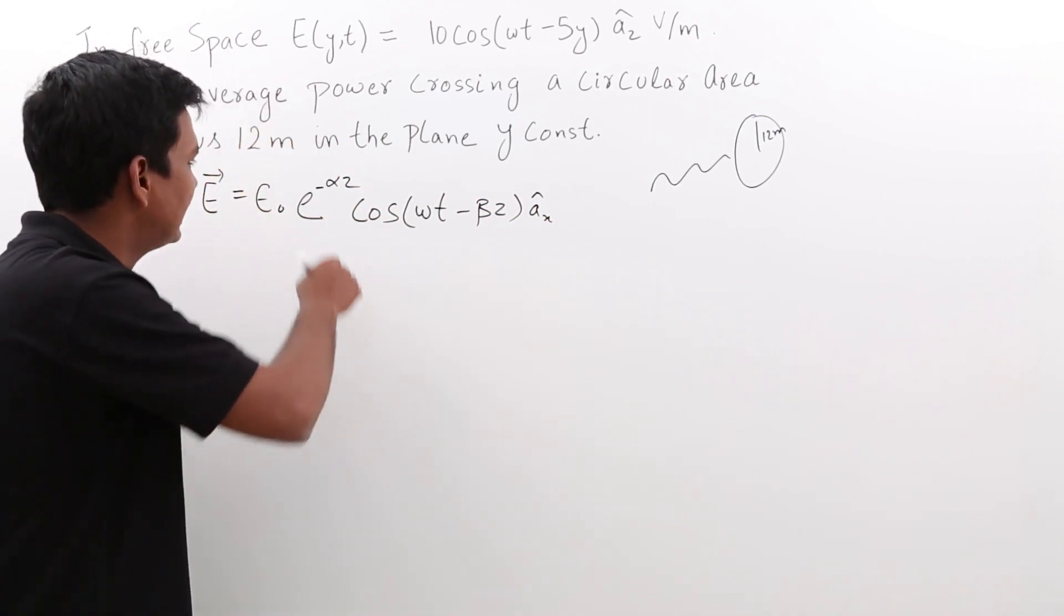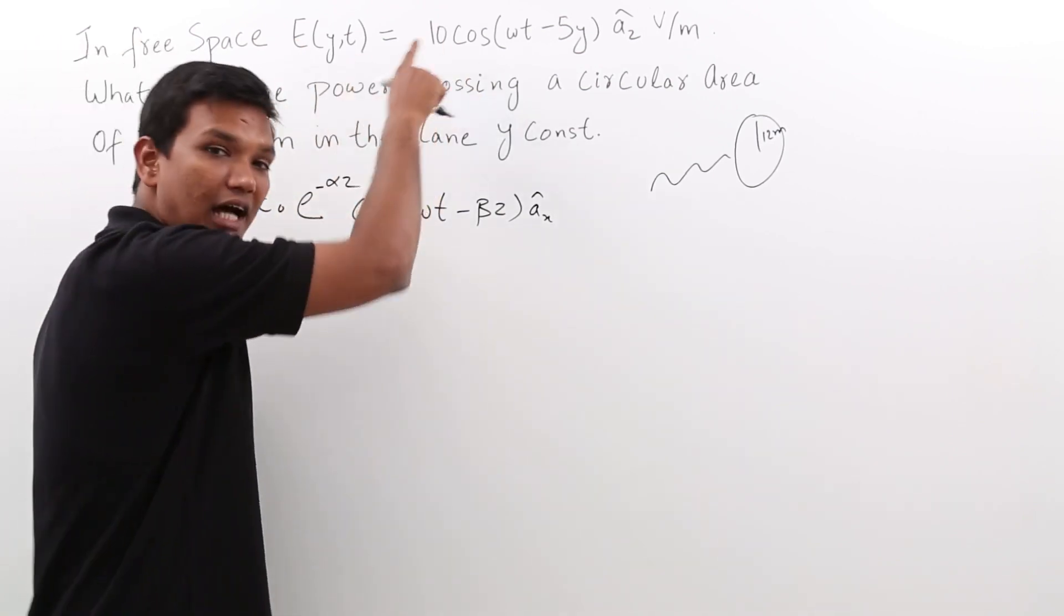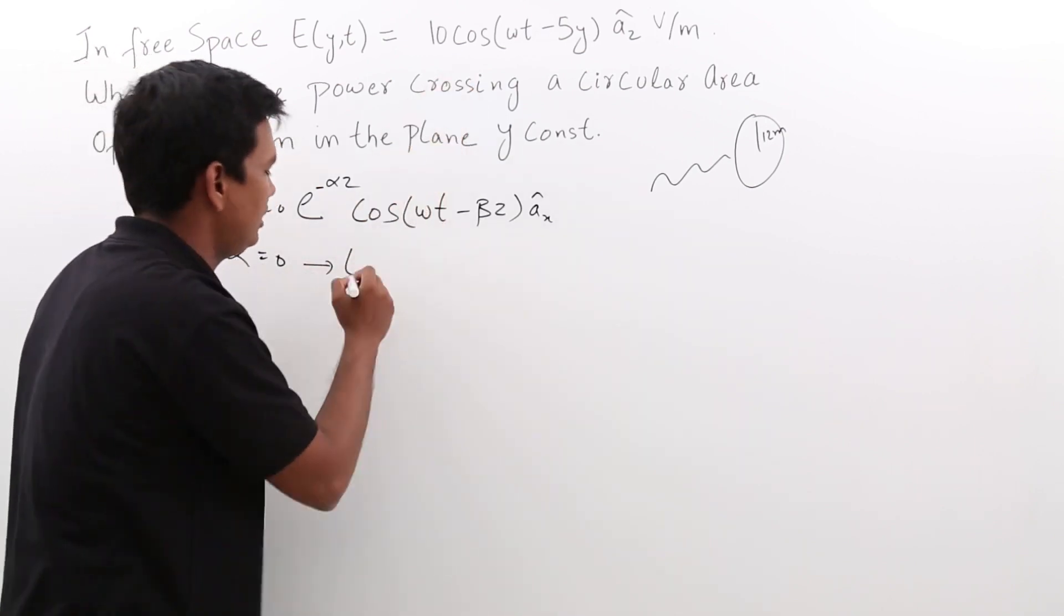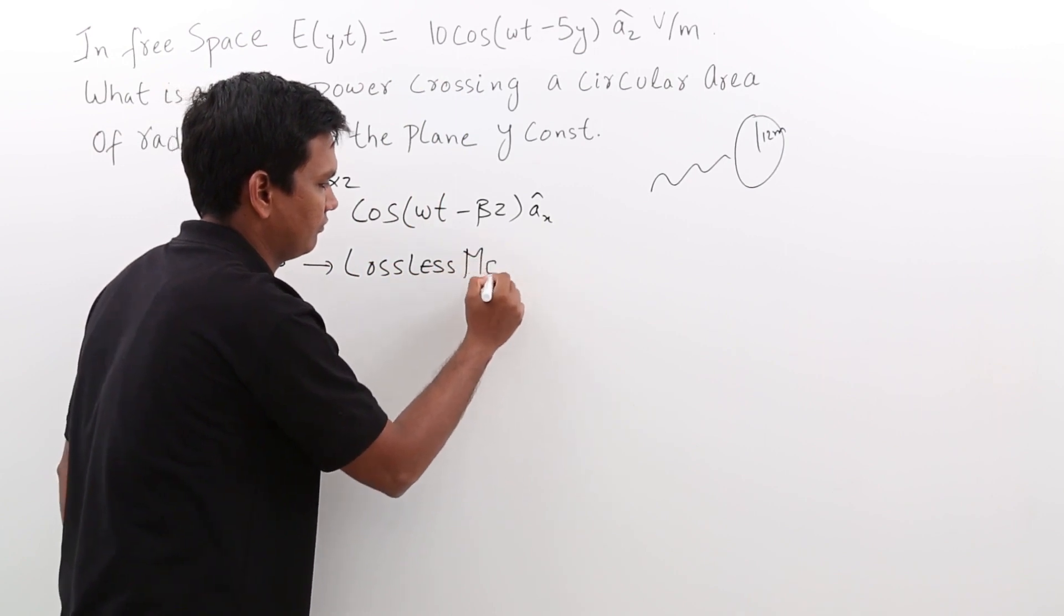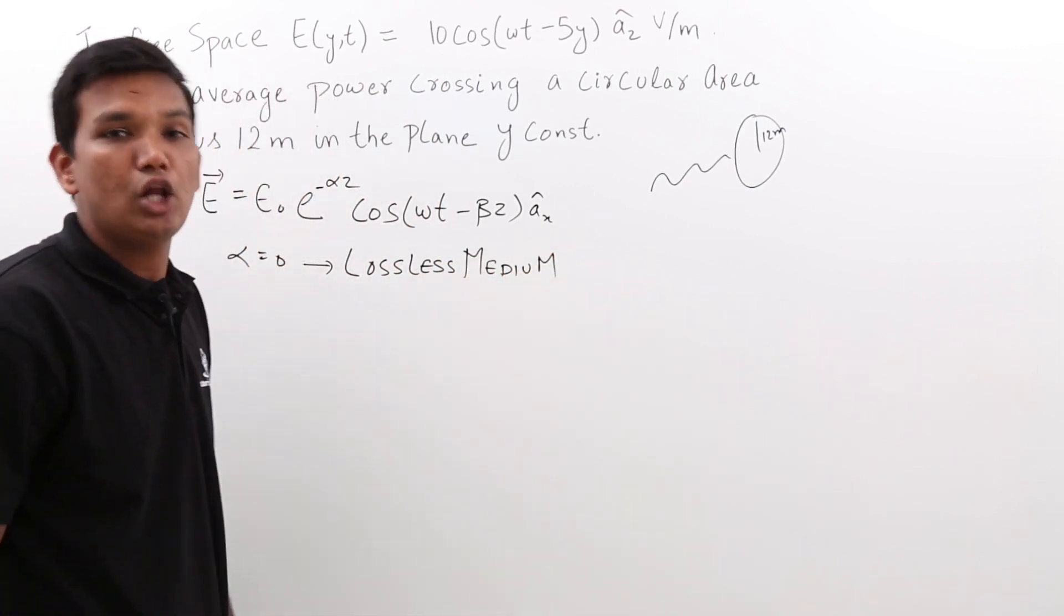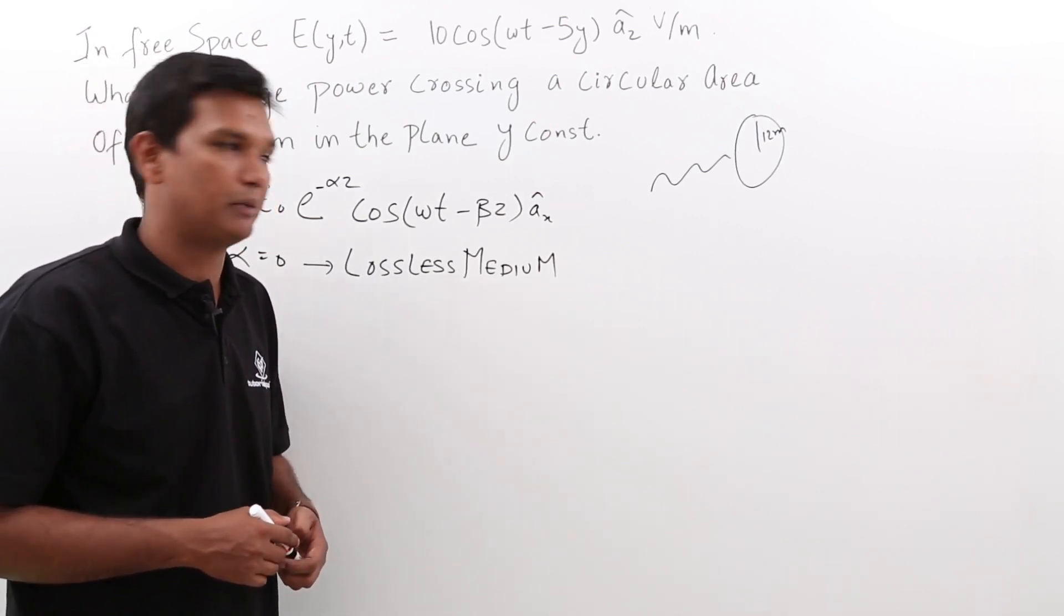If I compare this, can I say that α is 0 here. Because if you observe here, the α is 0. α is 0, it means this is a lossless medium. This is a lossless medium, where loss will be 0 or indirectly I can say that free charge carriers would be 0 in that medium.